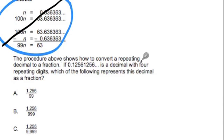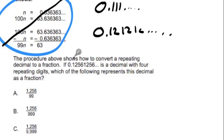The procedure above shows how to convert repeating decimals to a fraction. If 0.12561256... is a decimal with 4 repeating digits, which of the following represents the decimal as a fraction? Well, Chris, you said you had a strategy that's better than this. What is it? We're going to take these 3 repeating decimals and turn them into fractions in 3 easy steps. By the end of it, you're going to be able to solve this very quickly.